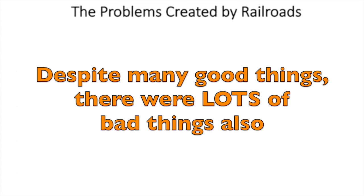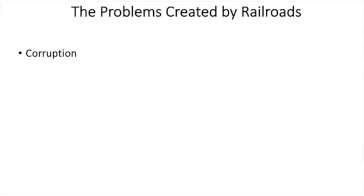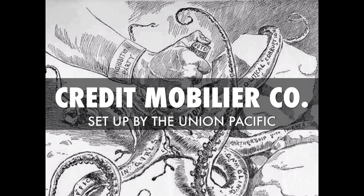Now the problems created by railroads — some of these we have already addressed a little bit, but all of the good things, keep in mind there were a lot of negative things as well. First and foremost was corruption. The boom of the railroad industry led to incredible government corruption. A great example of this under President Ulysses S. Grant, the Crédit Mobilier scandal was a great example of the government and corporations working together to improve profits, but in a corrupt manner.